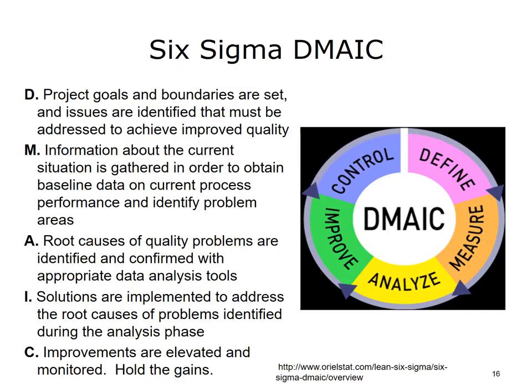In Six Sigma, Define means project goals and boundaries are set, and issues are identified that must be addressed to achieve improved quality. Measure means information about the current situation is gathered in order to obtain baseline data on current process performance and identify problem areas.